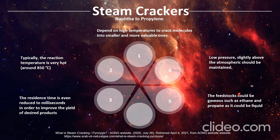For steam crackers, naphtha to propylene depends on high temperature to crack molecules into smaller and more valuable ones. Typically the reaction temperature is very hot, around 850 degrees Celsius. The residence time is reduced to milliseconds in order to improve the yield of the desired product. Low pressure, slightly above atmospheric, should be maintained, and the feedstock can be gases such as ethane and propane, or liquids.